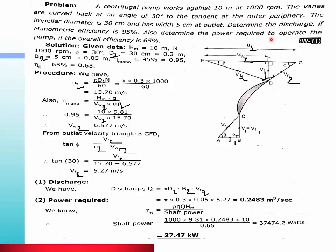Discharge formula is πD₂B₂VF₂. So here we have outer periphery, to find πD₂B₂VF₂. If the manometric efficiency is 65%, also determine the power required to operate the pump if the overall efficiency is 65%. So we have to find discharge and power required.